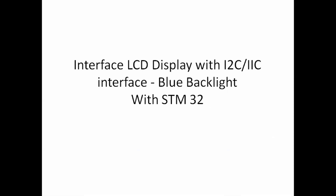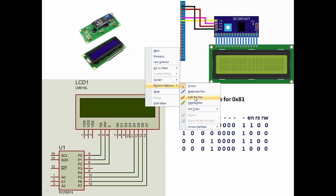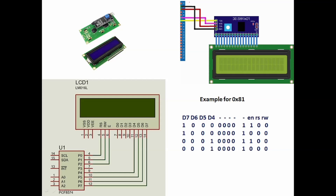Welcome to this new video in the STM32 series. In this video we will interface an LCD with I2C interface with the STM32 microcontroller. I am using a blue backlight LCD. This I2C interface LCD has the advantage of less hardware complexity because using only four wires you can operate this type of LCD, which would otherwise require eight data channels, three control channels, power supply and ground.